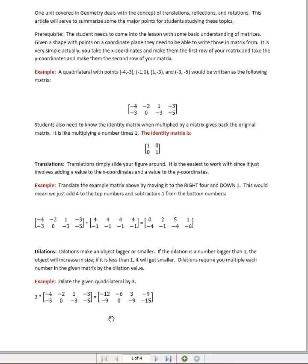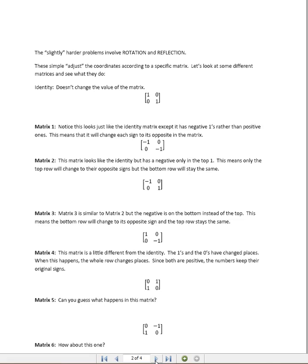So those are the translations and the dilations. The ones that are slightly harder require us to look at these matrices. Remember the identity matrix I put up here again just to remind us what it looks like. It has a 1, then a 0, and then a 0, and a 1. Let's take a look at matrix 1 and talk about how this matrix is similar and how it is different from the identity matrix.